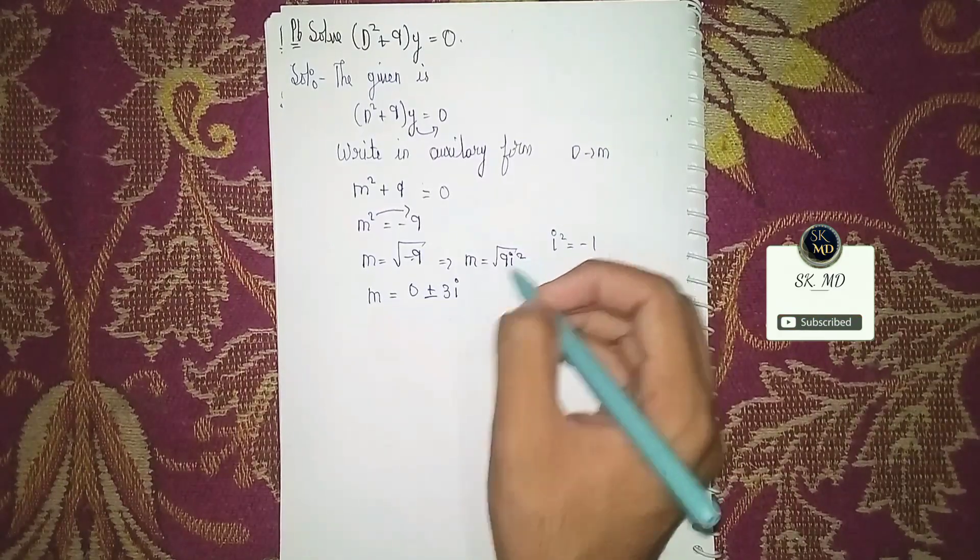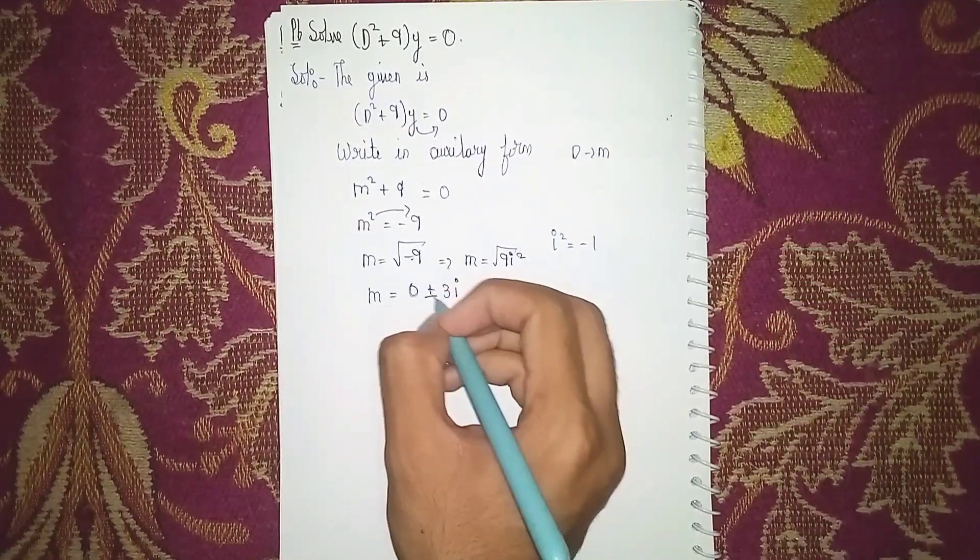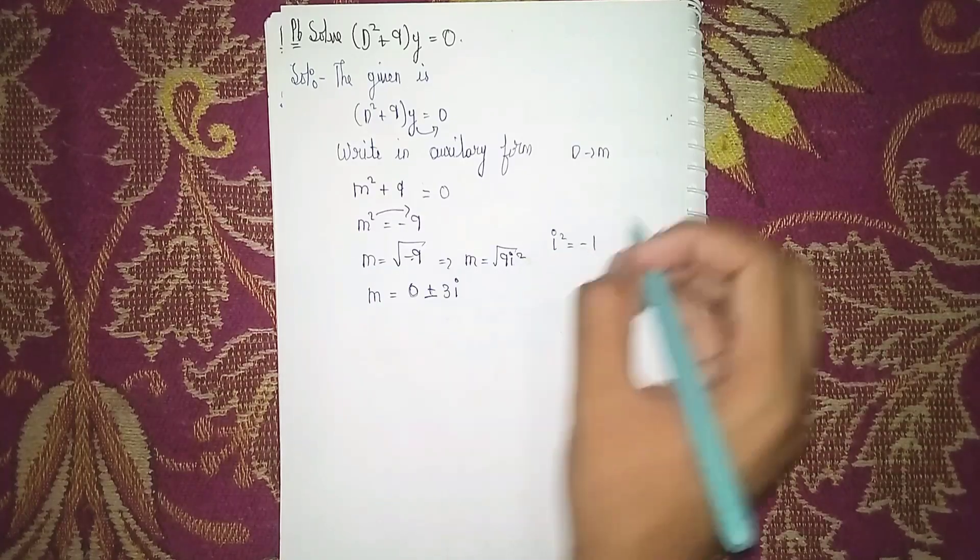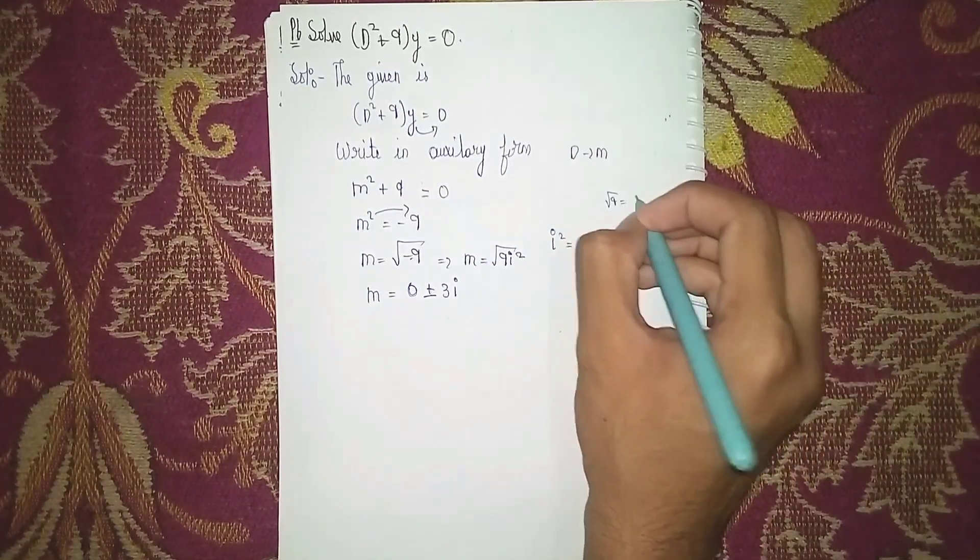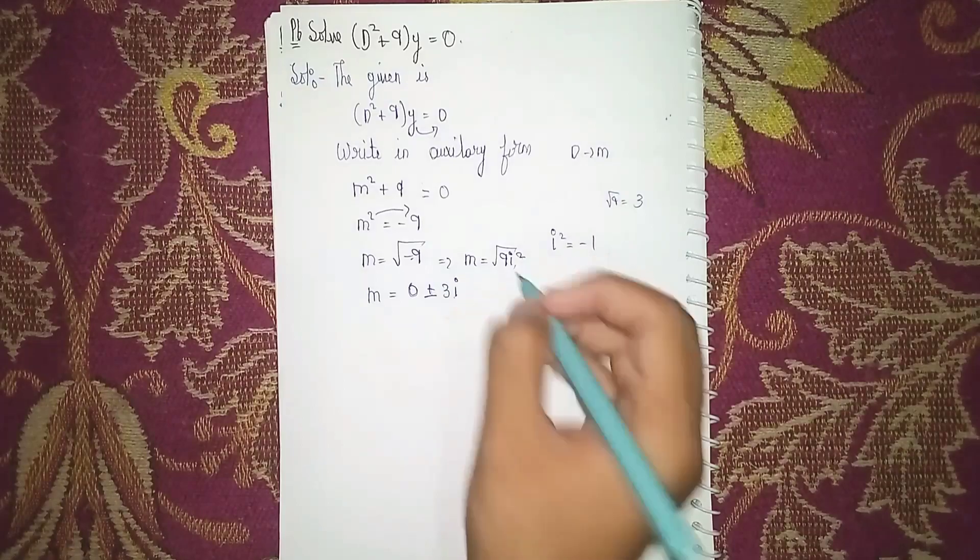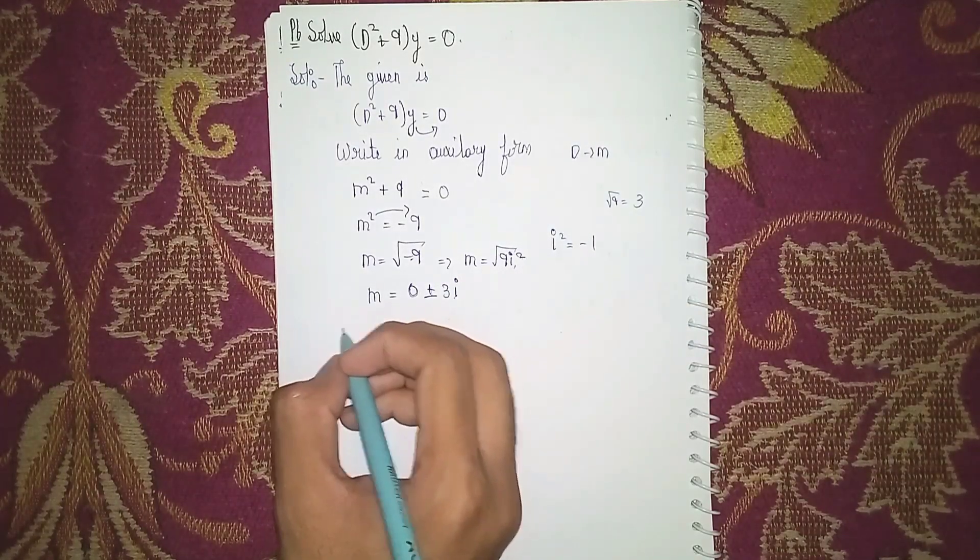So you can take the first value as 0, then ±√3i. Under root 9 equals 3, i as it is. Next, the roots.